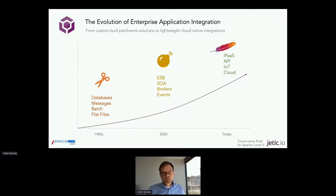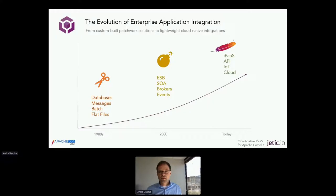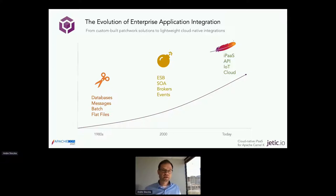In the 80s this problem evolved as more applications hit the market and ERP systems became more common. Companies didn't know how to integrate, so bigger companies like IBM came up with messaging frameworks. They used databases heavily — multiple applications dipping into the same database — and started doing batch files, but it was all custom coded. There was no real integration solution, so they hand-coded everything, a tedious process. This continued until the late 90s when the concept of ESB, the enterprise service bus, evolved.